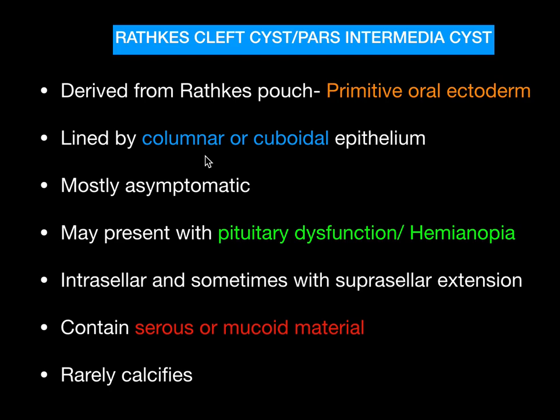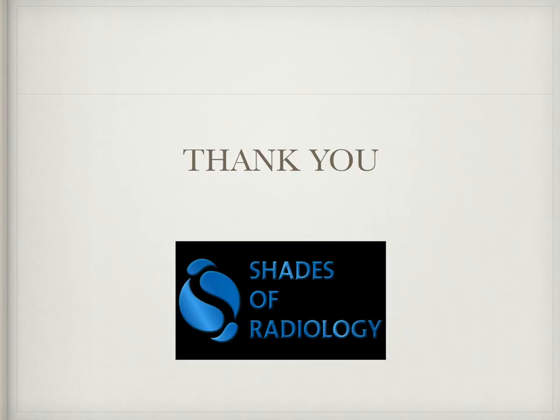Most of the time patients are asymptomatic, and they may present with pituitary dysfunction — as in our case — or hemianopia, with intrasellar and sometimes suprasellar extension. It may contain serous or mucoid material, which gives the T1 hyperintensity on MRI, and it shows calcifications very rarely. This is a classic case of Rathke's cleft cyst, also called pars intermedia cyst. Thank you all.